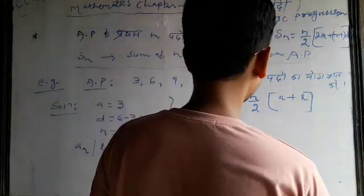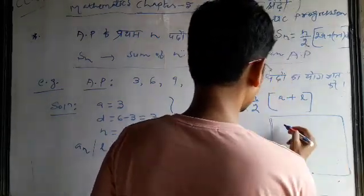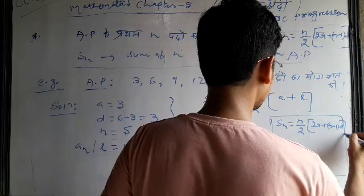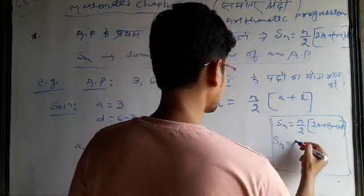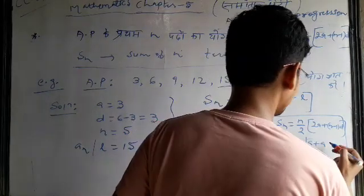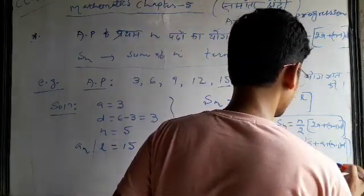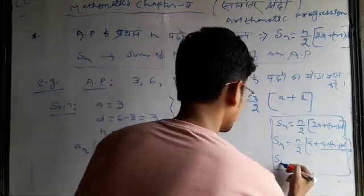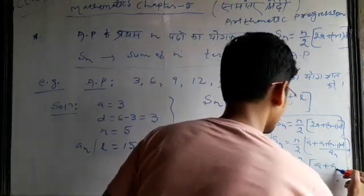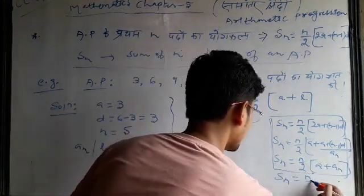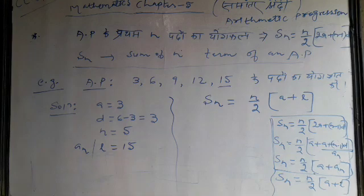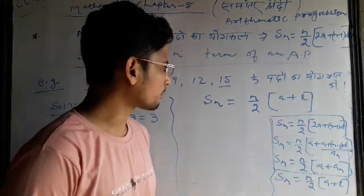Let me show where l comes from. Sn is equal to n by 2, 2a plus n minus 1 into d. Separating 2a: a plus n minus 1 into d equals a_n. We know a_n is the last term, so a plus a_n equals a plus l. That is where this formula comes from — when we know the last term.